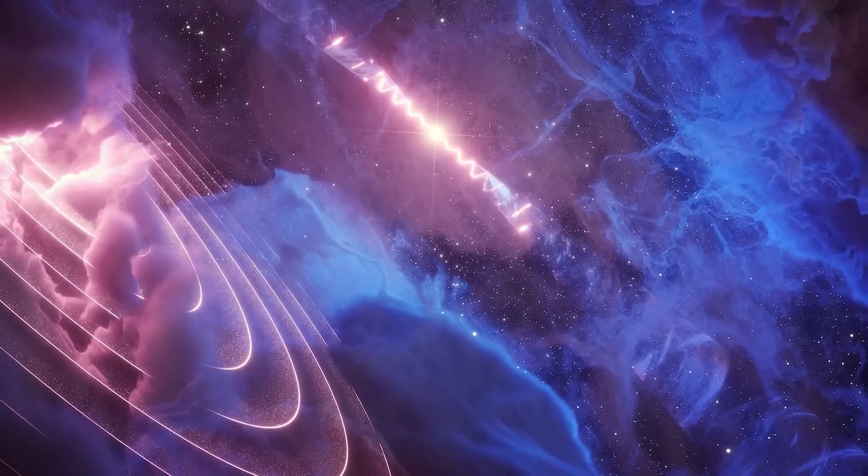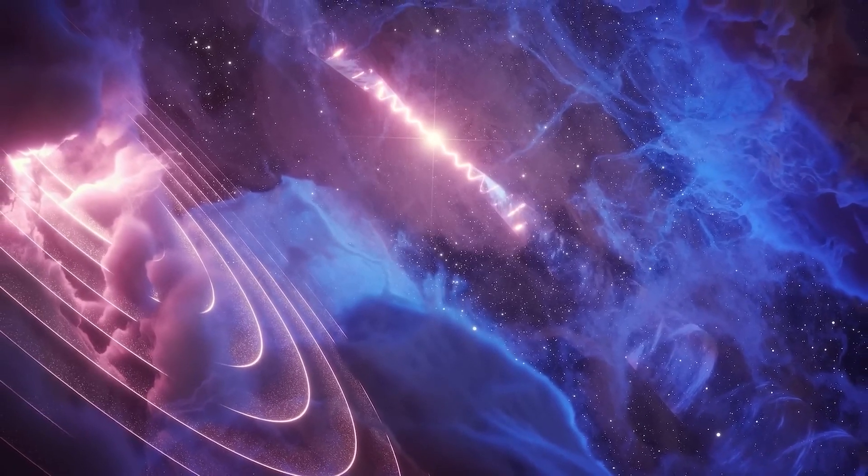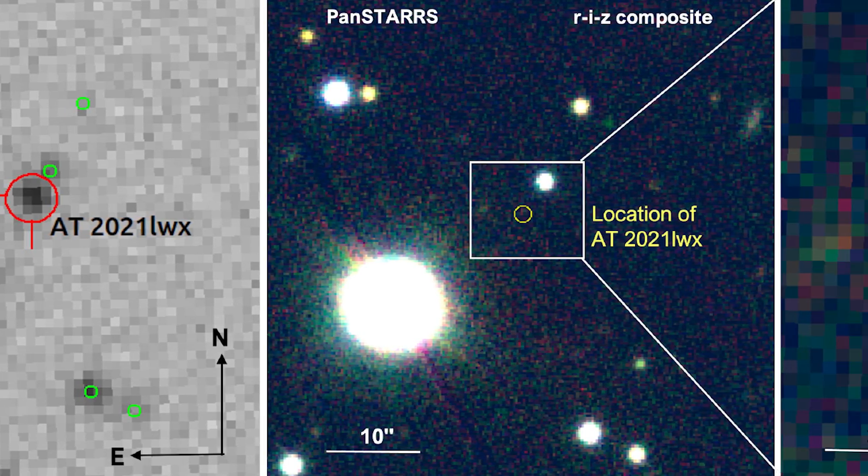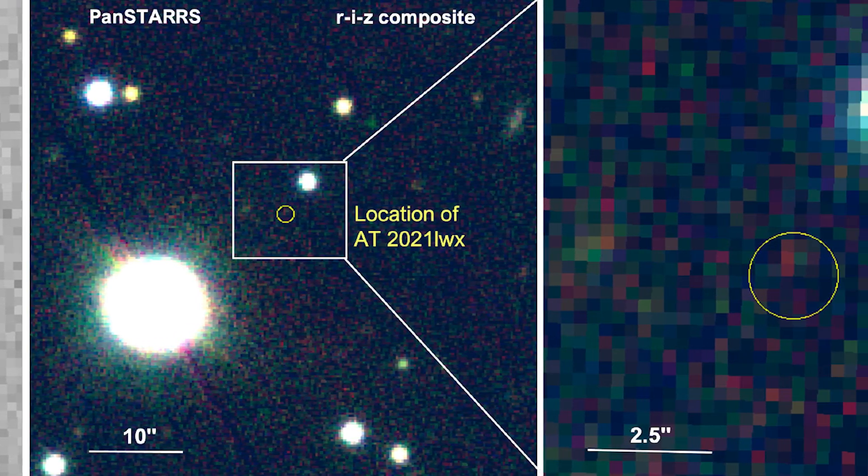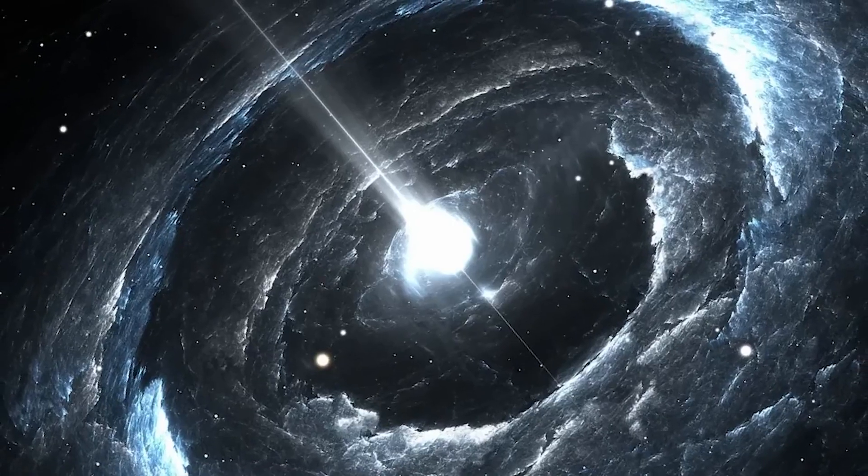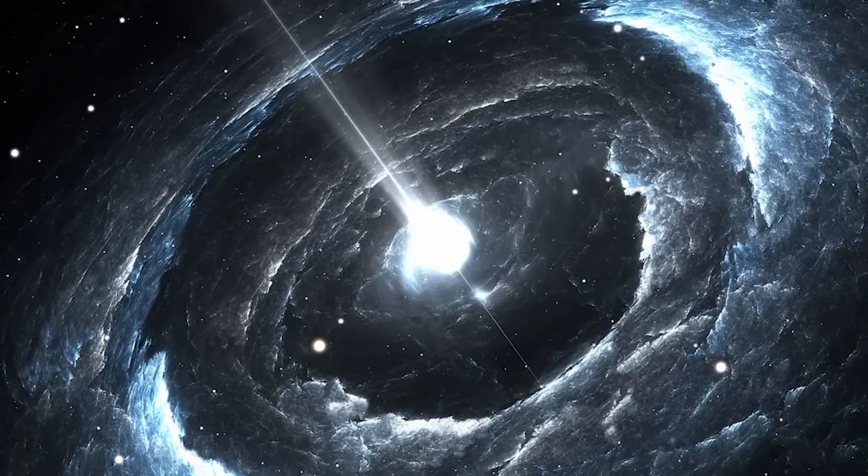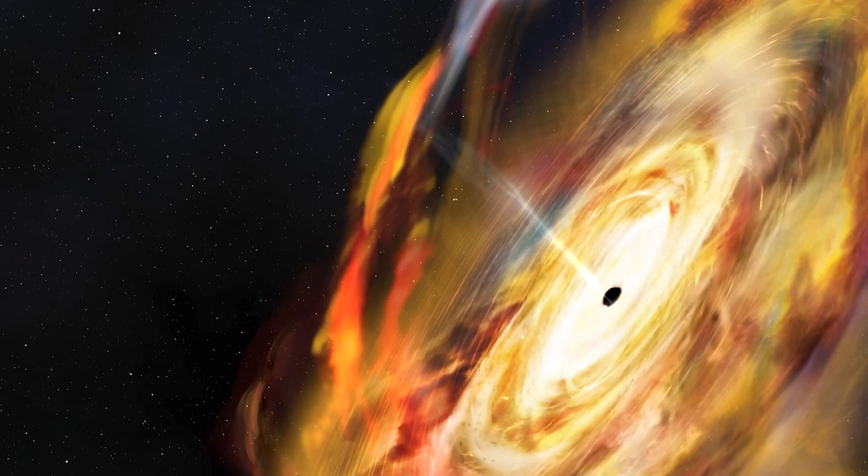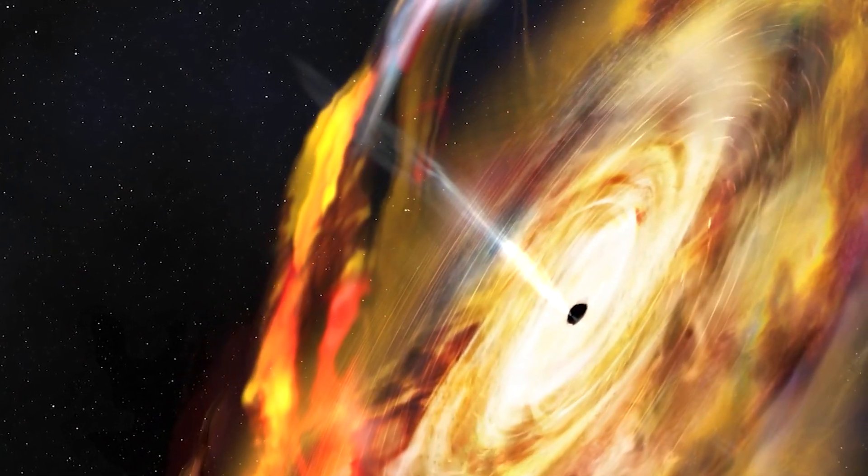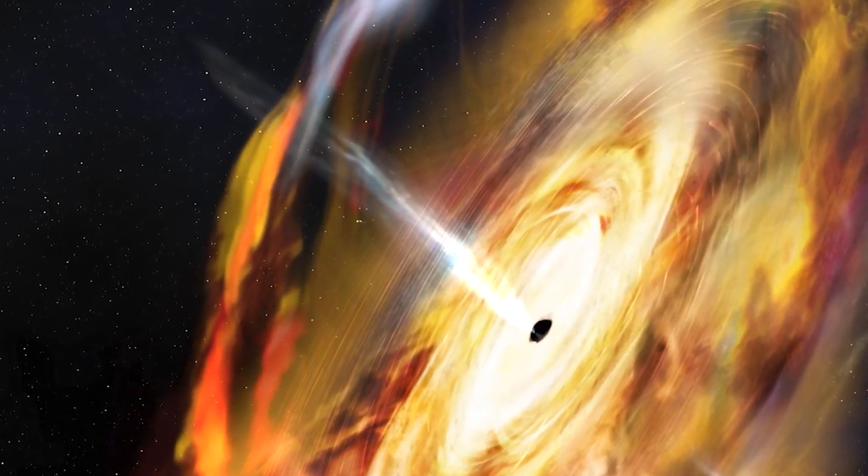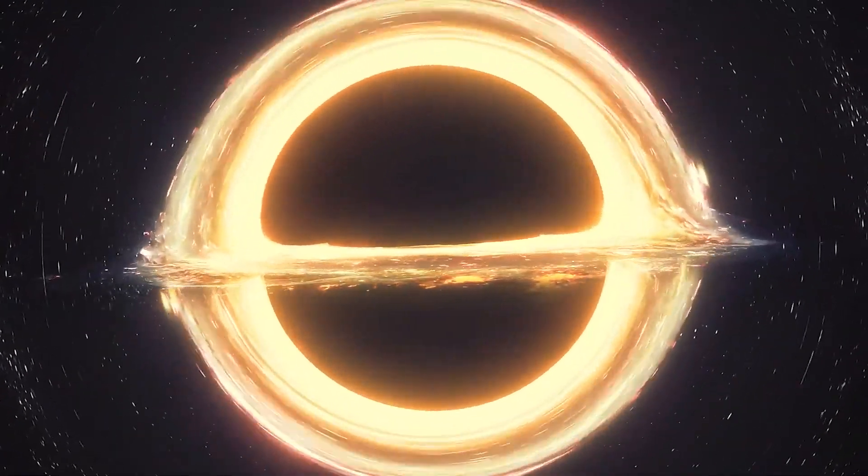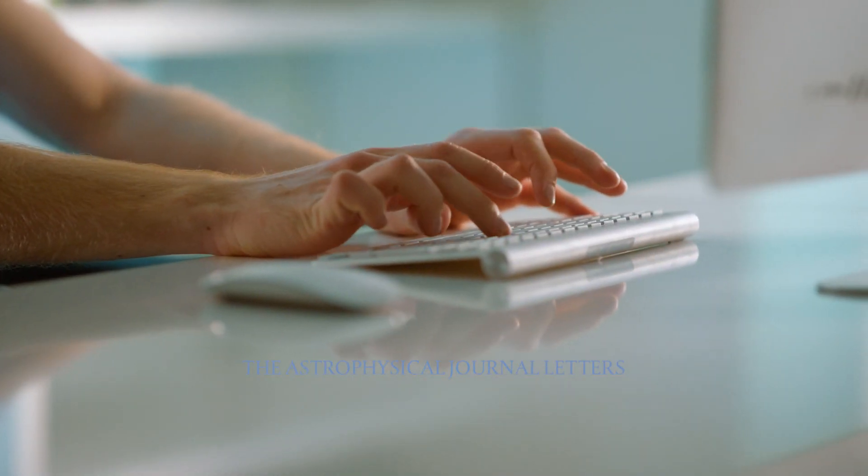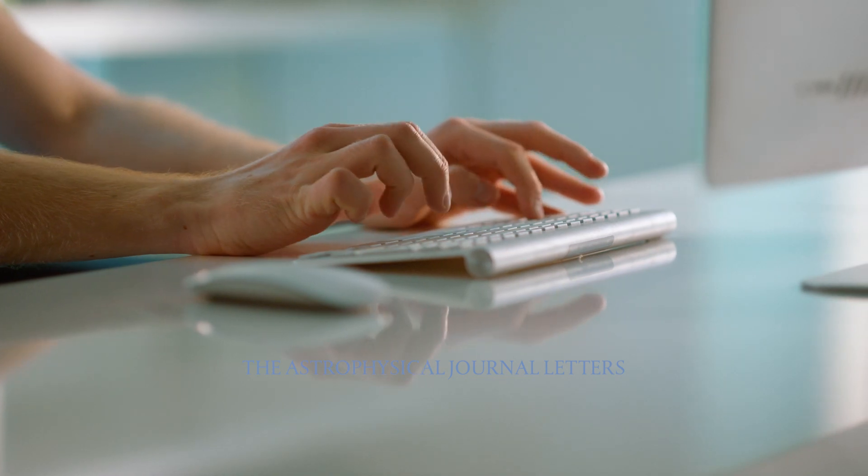The distant object, a surprisingly bright flash of light that lasted for more than two years, was discovered while lurking inside an enormous data set collected by computer-guided telescopes. After finding the brightly lit patch of sky in the data and cross-referencing observations by other telescopes, astronomers realized they had stumbled upon one of the most powerful cosmic explosions ever witnessed. They reported their findings on the arXiv preprint server April 17th, and their paper has been accepted for publication in the Astrophysical Journal Letters.